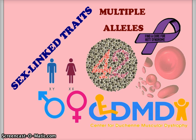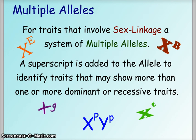There are four different traits we are going to look at: Rett syndrome, colorblindness, hemophilia, and Duchenne muscular dystrophy. In all four of these cases, the sex-linked traits are carried on the X chromosome. Just as we saw with codominance, incomplete dominance, and blood typing, sex linkage is another multiple allele situation. We're going to use superscripts added to the allele to identify traits as dominant or recessive, mostly from the X chromosome perspective.